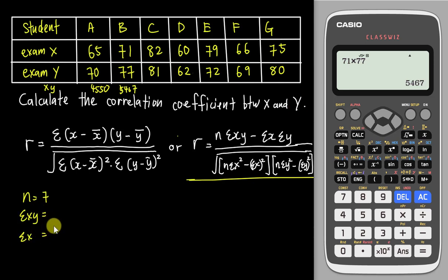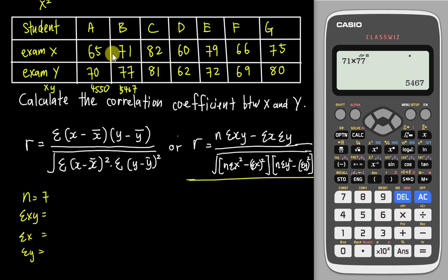Sum of X is straightforward — you add all the X values to get sum of X. Sum of Y is the same idea — you add all the Y values to get sum of Y. At the bottom of the formula, sum of X squared means you take the sum of X value and square it. Similarly, sum of Y squared means you take the sum of Y value and square it. However, the sum of X-squared term is different — here you square each individual X value first (e.g., 65 squared equals 4225, 71 squared equals 5041), then add them all up. Do the same for Y squared.